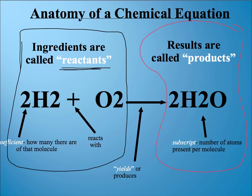Now there's a couple other terms that we need to make sure we know. One of them down here is coefficient. And the coefficient tells you how many there are of that molecule. So if we look right here at this coefficient, this big number 2, that 2 is telling you that there are two H2 molecules.